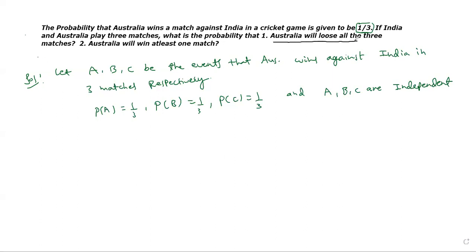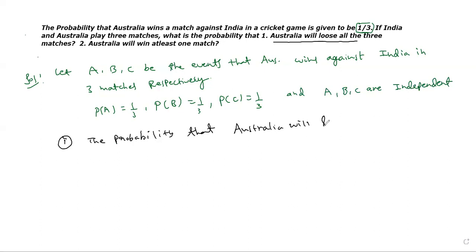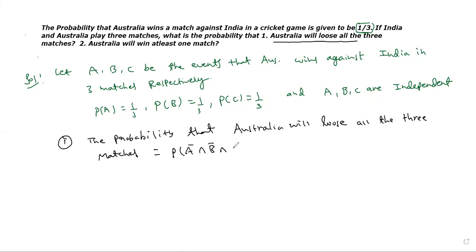The first question is: what is the probability that Australia will lose all the three matches? Losing all three matches means all complements — A complement intersection B complement intersection C complement. Since all are independent events, you can write it as P of A bar into P of B bar into P of C bar.